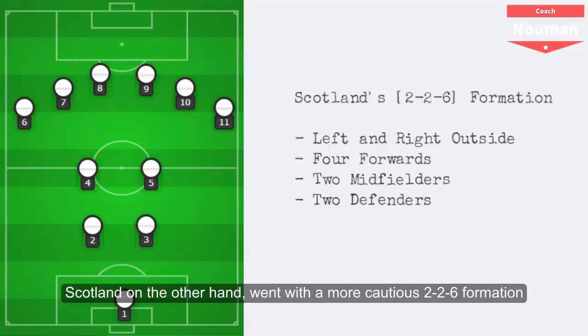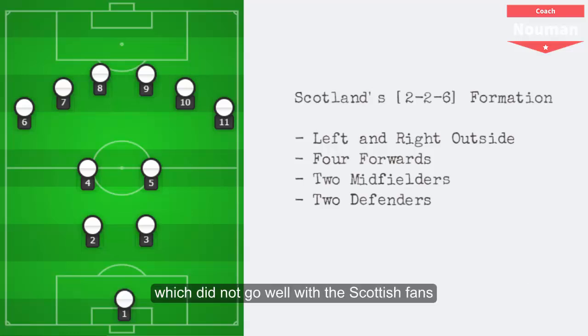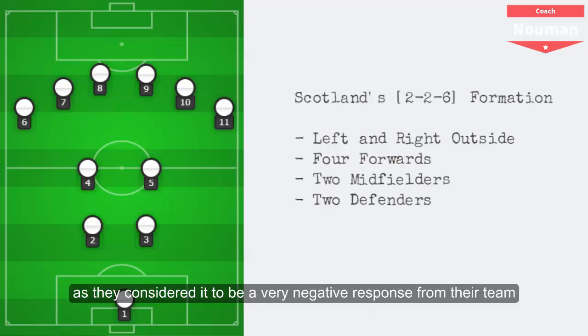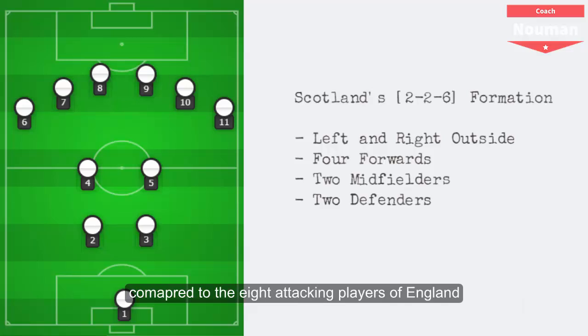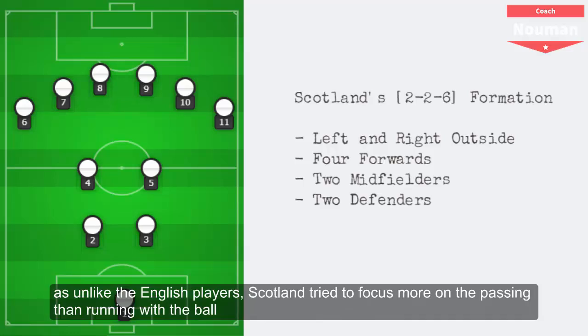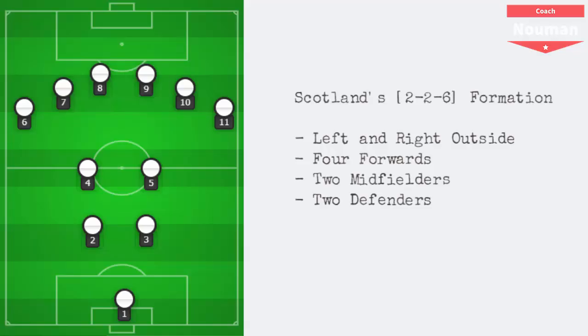Scotland, on the other hand, went with a more cautious 2-6 formation, which did not go well with the Scottish fans as they considered it to be a very negative response from their team compared to the eight attacking players of England. But Scotland did surprise England as, unlike the English players, Scotland tried to focus more on passing than running with the ball.